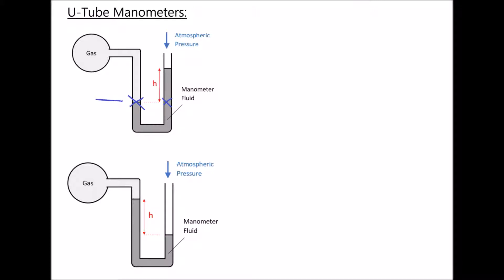The pressure in the left hand arm here represents the pressure of the gas. And if that pressure is equal to the pressure on the other side, then that pressure is made up of two things: atmospheric pressure, because the right hand arm of the U-tube manometer is open to atmosphere, but we also have a column of liquid here that's going to create hydrostatic pressure. Let's assume that atmospheric pressure is equal to atmospheric pressure at sea level, which is 101,325 pascals.